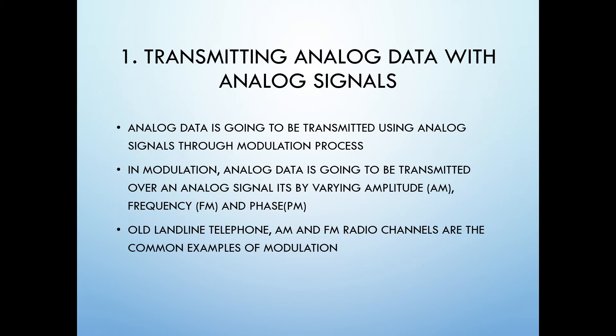Now let's take a look at the first type, which is converting analog data to an analog signal. In this type of conversion, analog data is going to be transmitted using analog signals. This process is called modulation. There are three types of modulations: amplitude modulation, frequency modulation, and phase modulation.